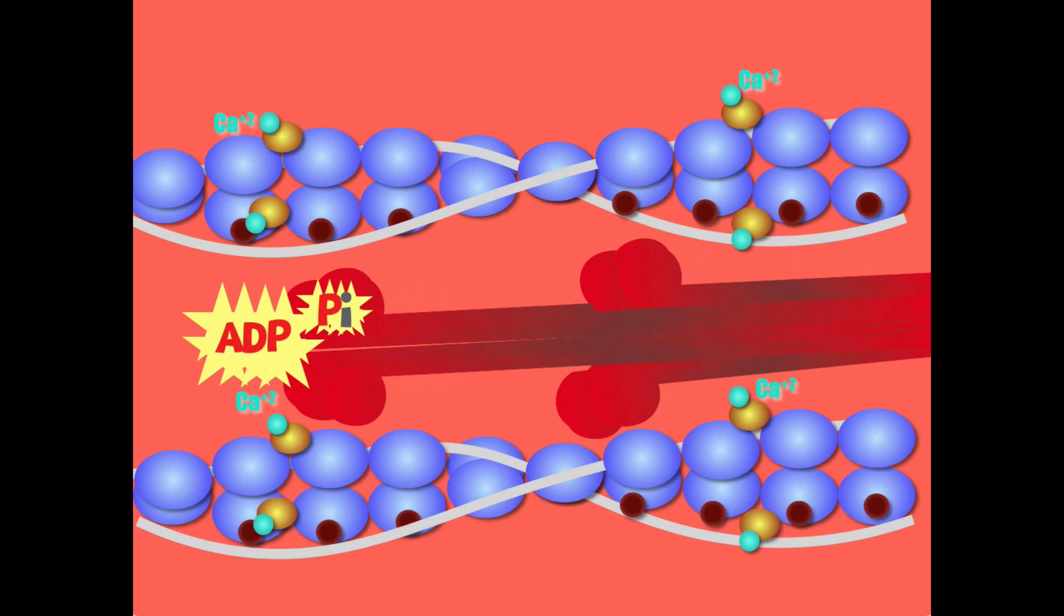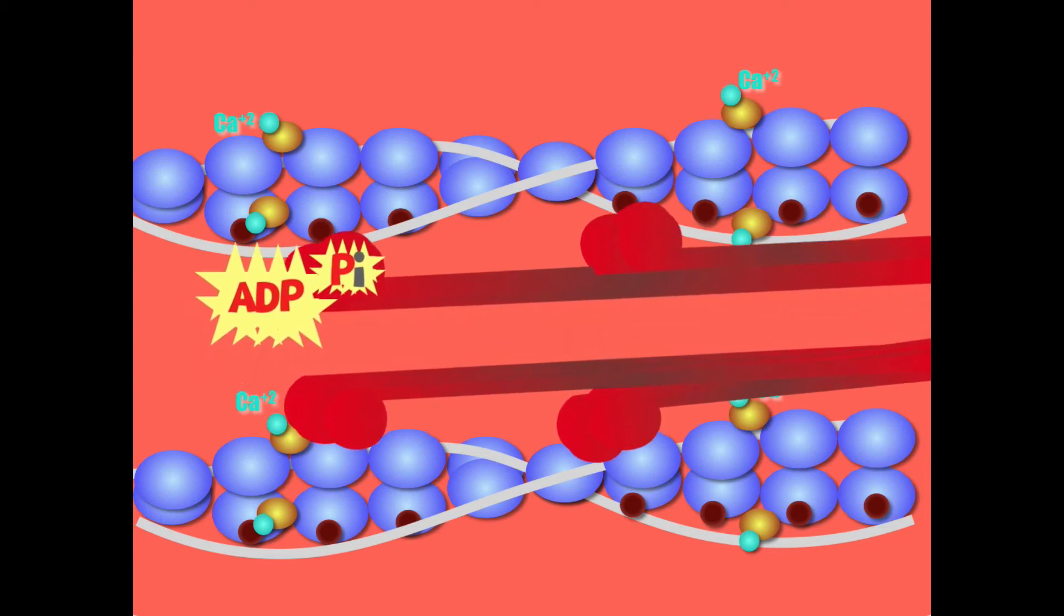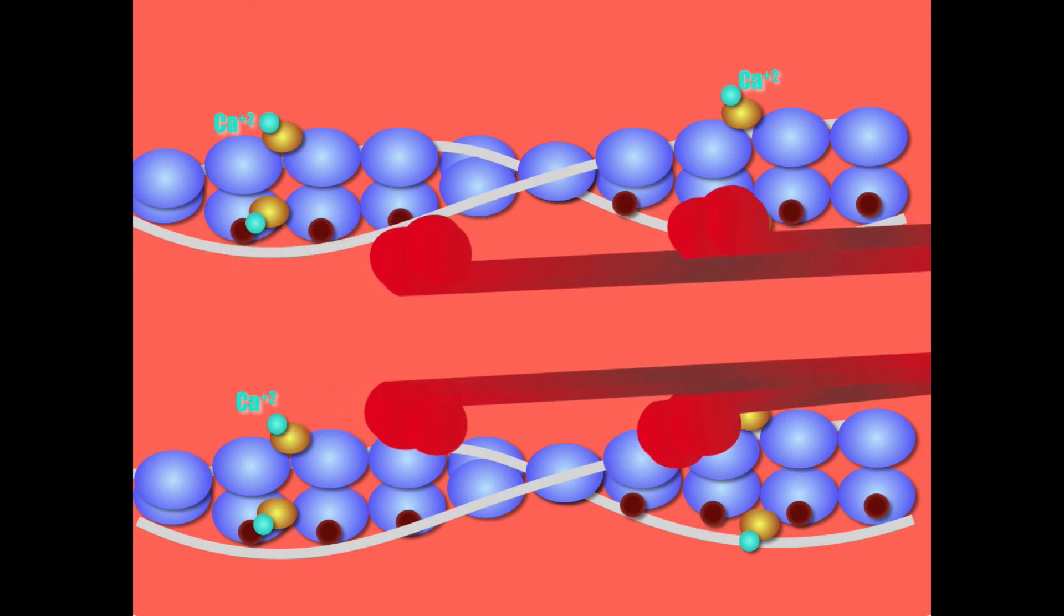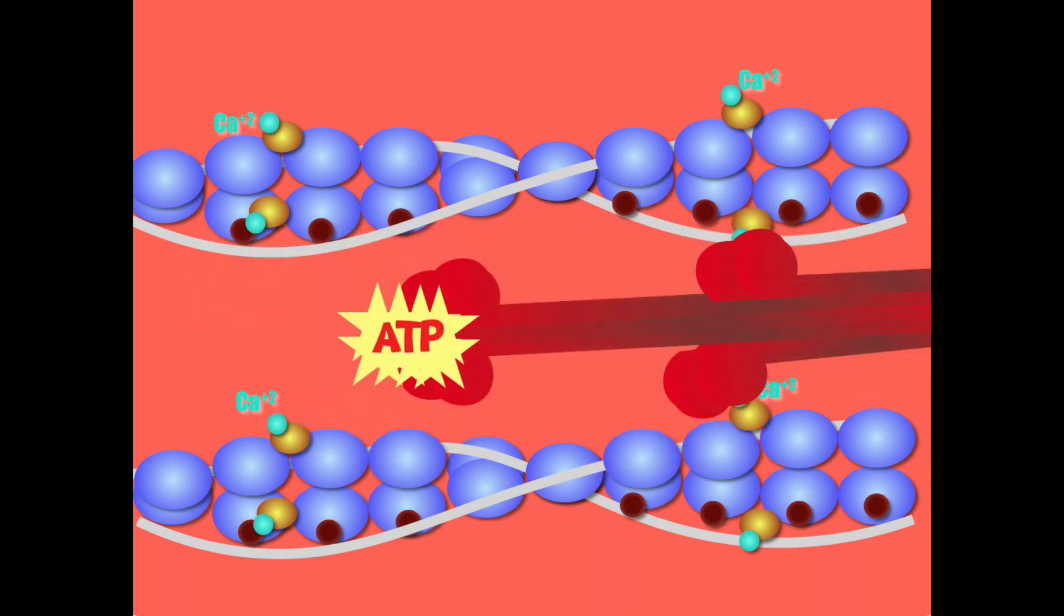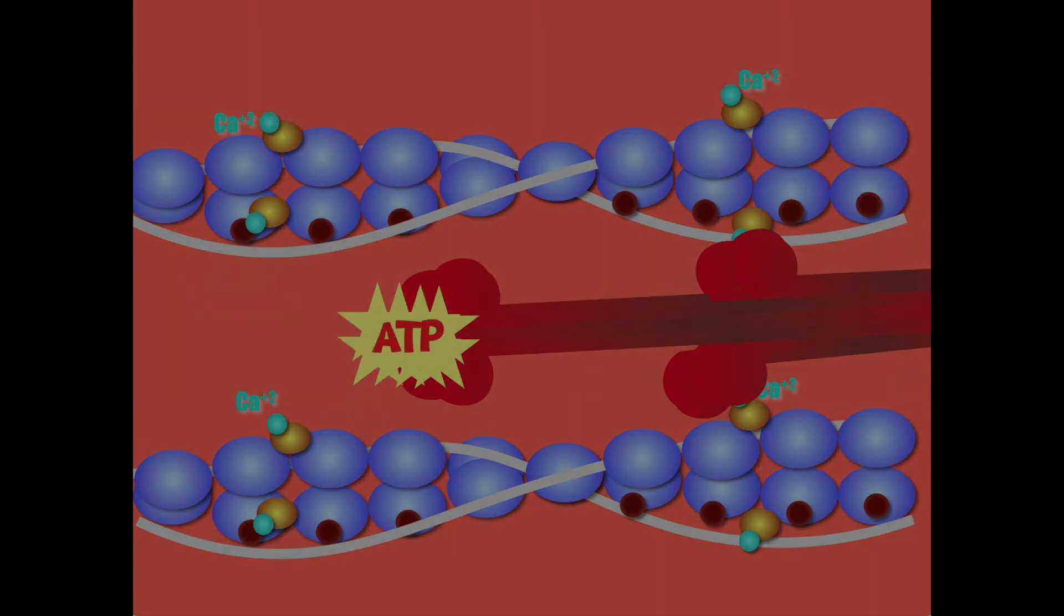Myosin ATPase breaks up ATP into ADP and phosphate, then the cross bridge formation, power stroke, and then recovery stroke with ATP. That does it for the contraction phase of muscle contraction. Thanks for watching and good luck in your studies.